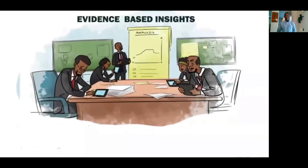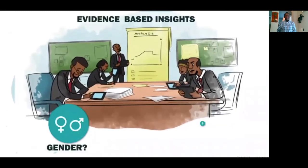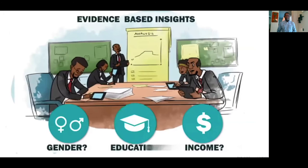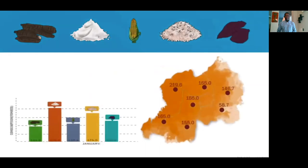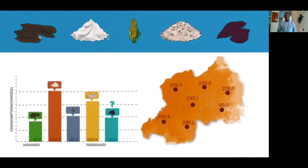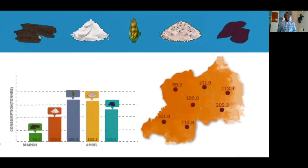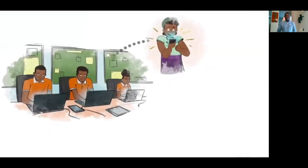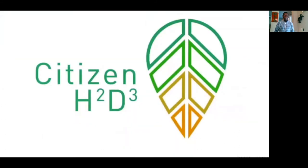Data is sent to a central database where automated analysis will be implemented to generate information. This information will provide evidence-based insights for understanding malnutrition and the role of gender, income, and education in driving these patterns. With these insights, decision makers will be able to tailor responses to the needs of specific target areas and populations. Citizen H2D3 — empowering citizens to eat well and live well.